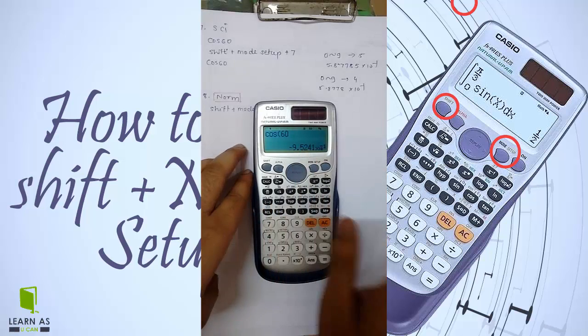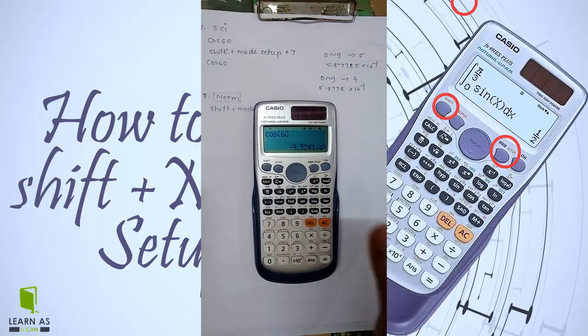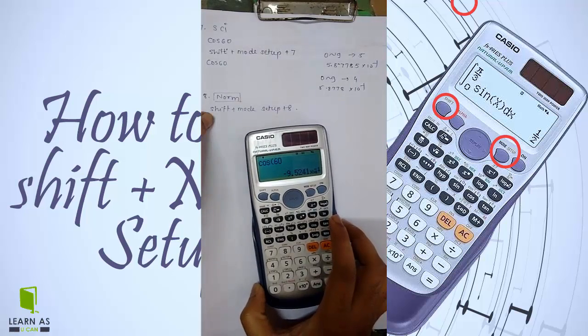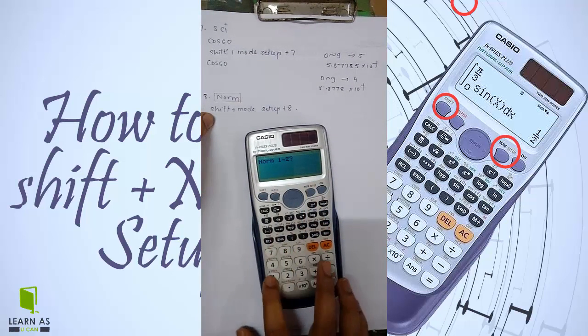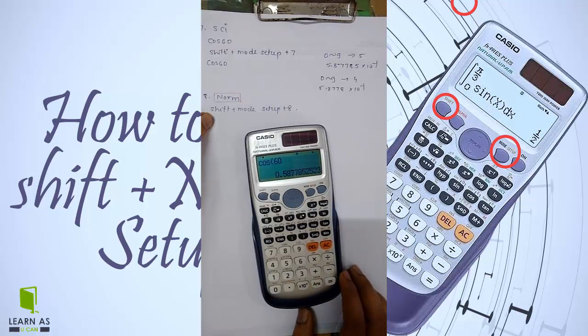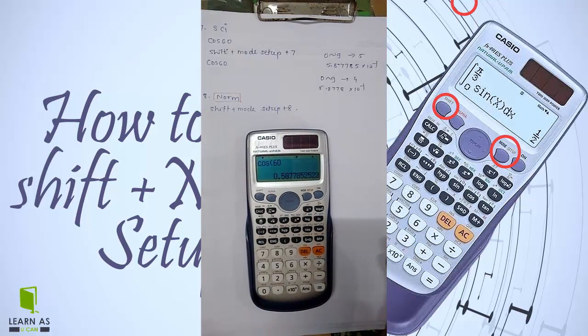And next is normal. Normal operation - you can see normal operation. In this way you can use shift plus mode setup.